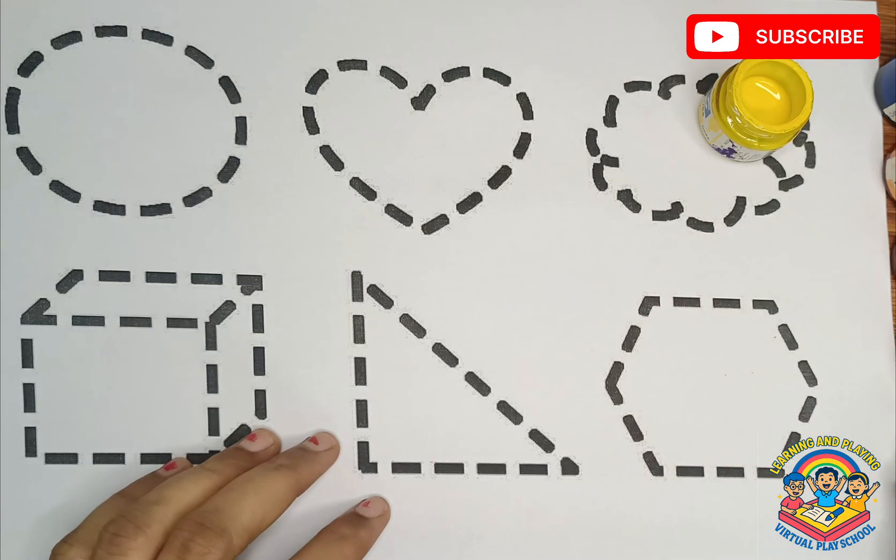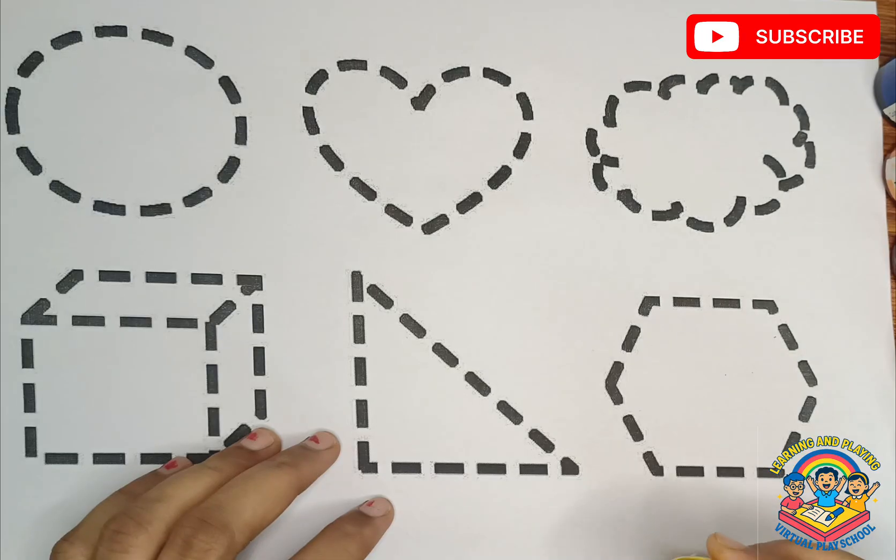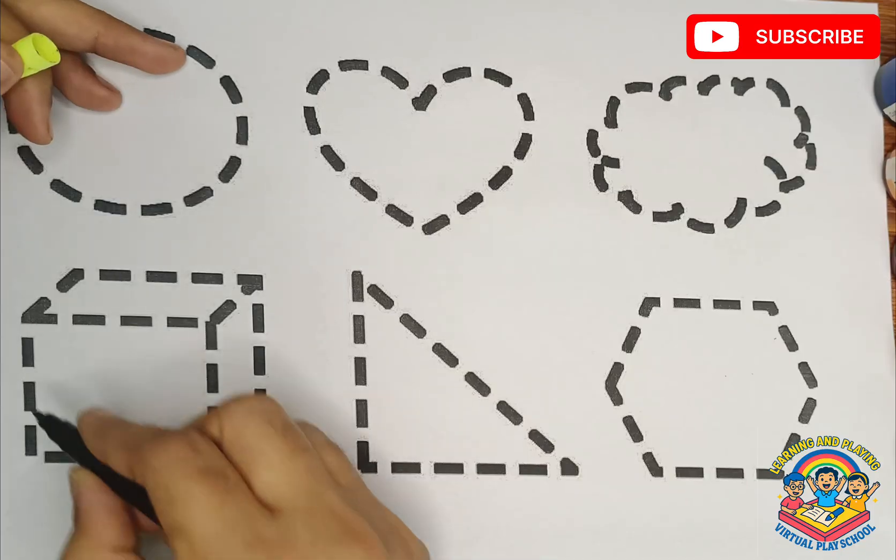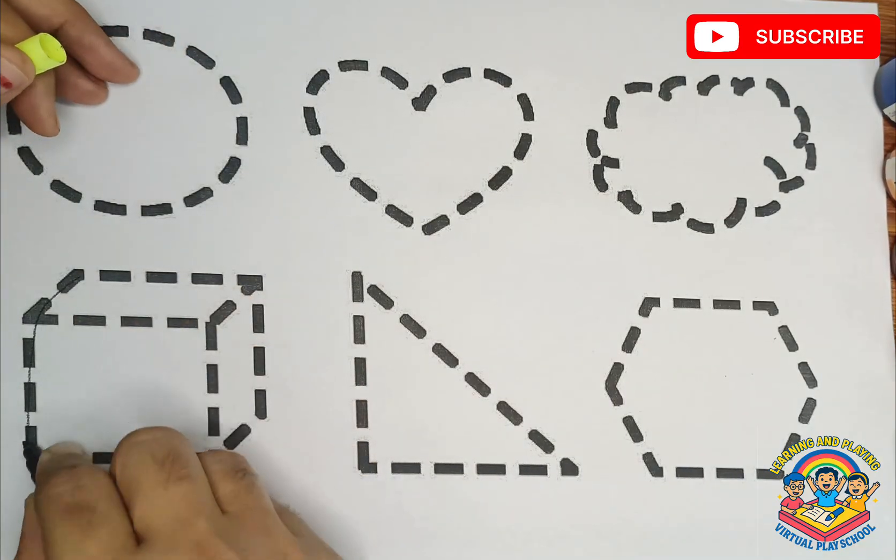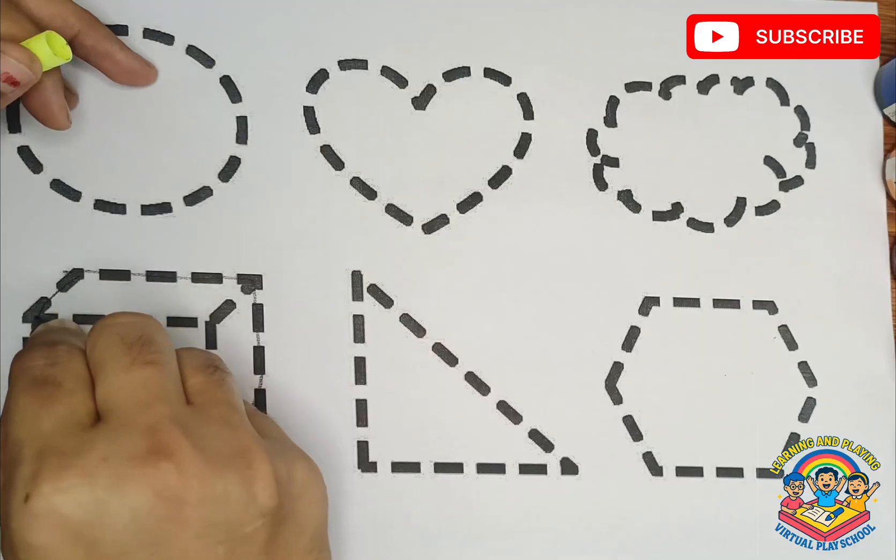Which color kids? This is green color. Yellow color. Which color kids? This is yellow color. Cute, what is this kids?